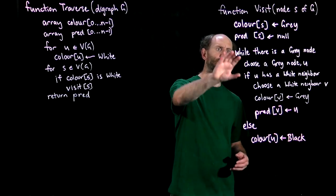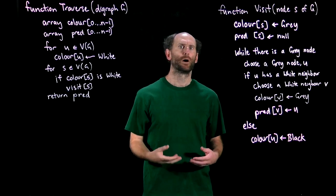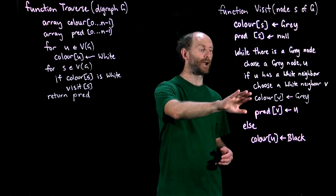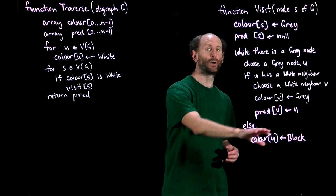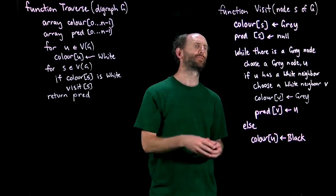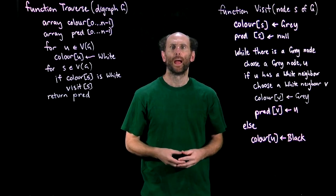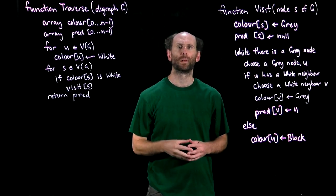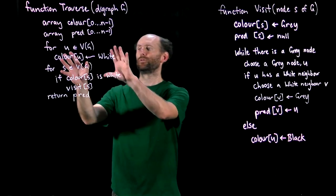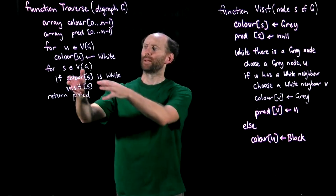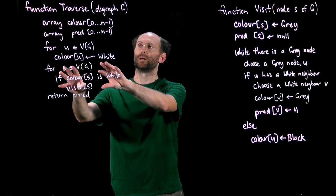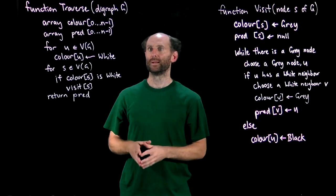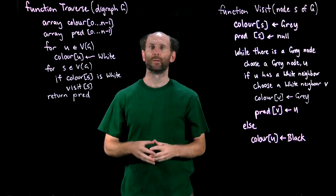Notice that each pass of the while loop changes the color of exactly one node — either turning a white neighbor of the chosen gray node to gray, or turning the chosen gray node black. After each pass we return to choose another gray node and continue until every node reachable from S has turned black. At that point we return to the traverse routine. If there are remaining white nodes in G, we dive back into visit; otherwise everything is black and we return the predecessor array.